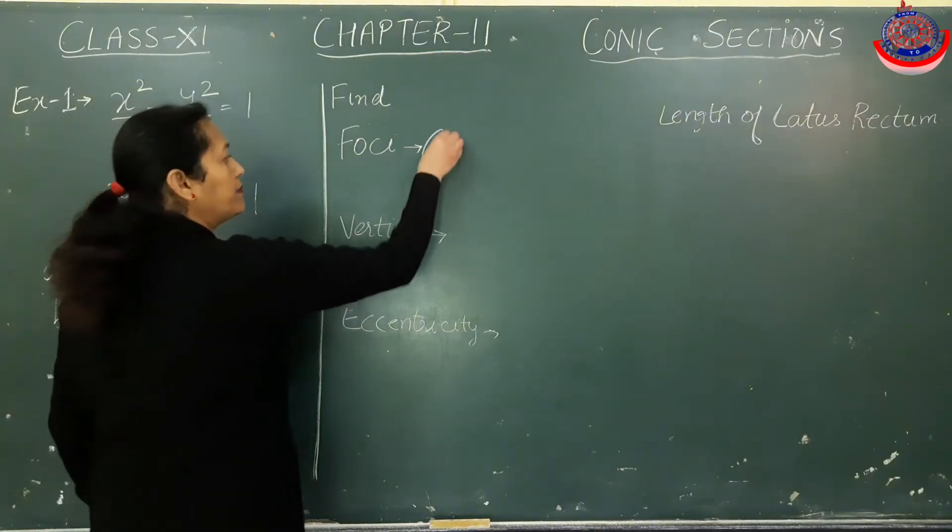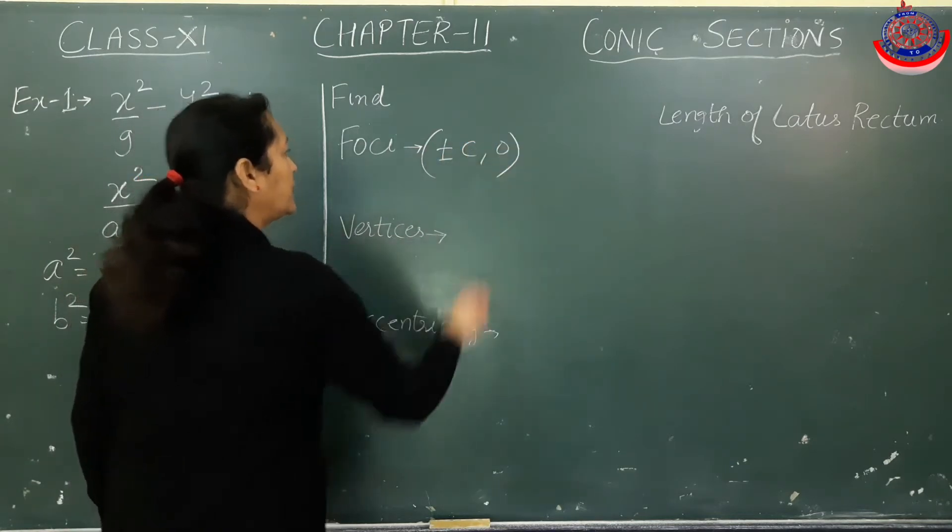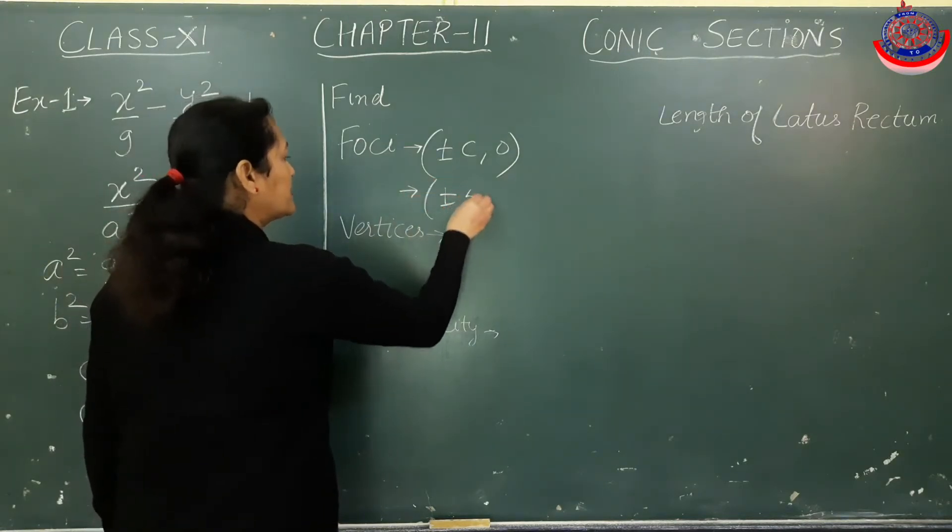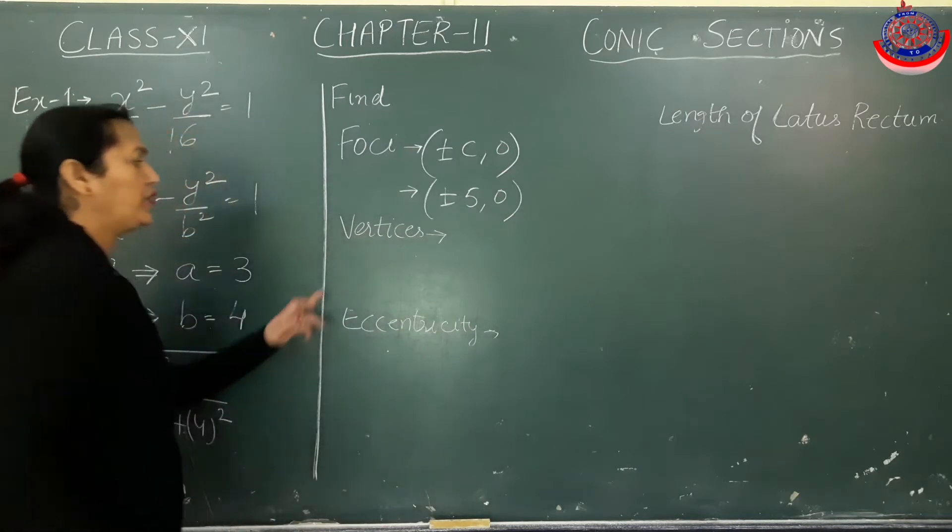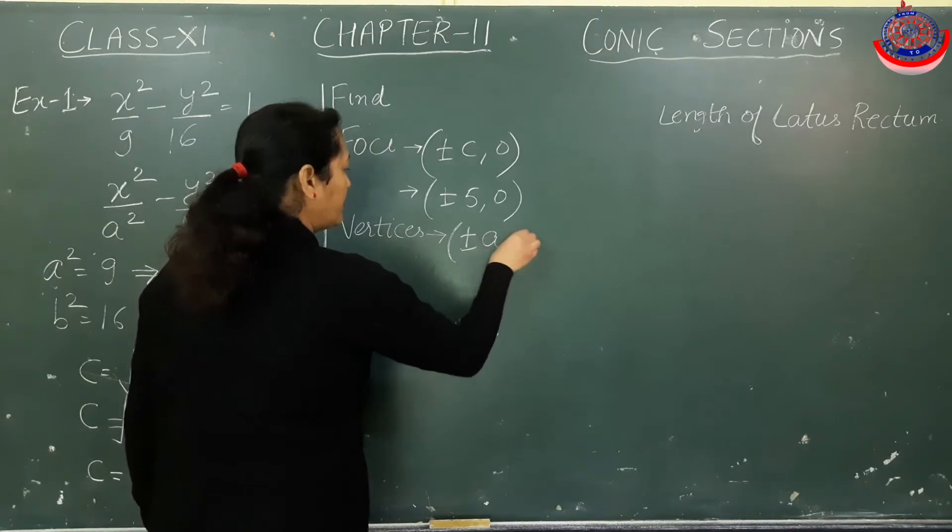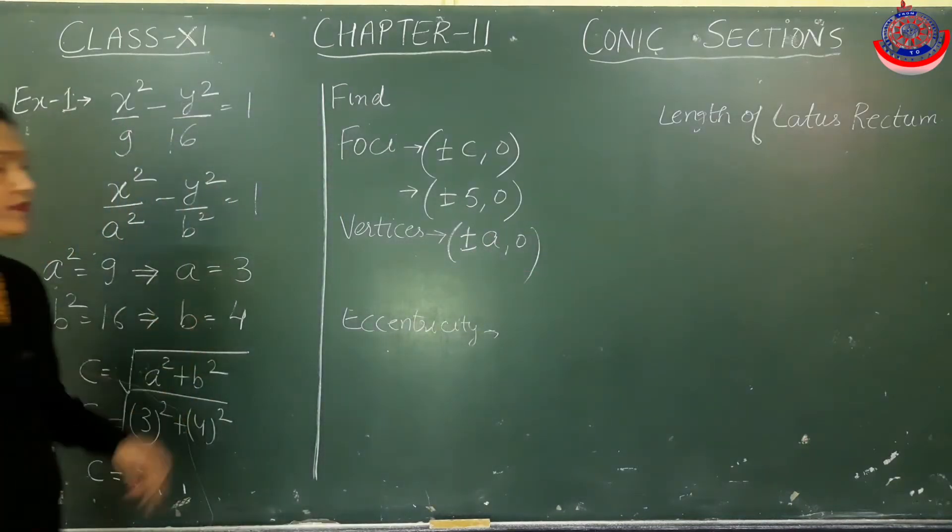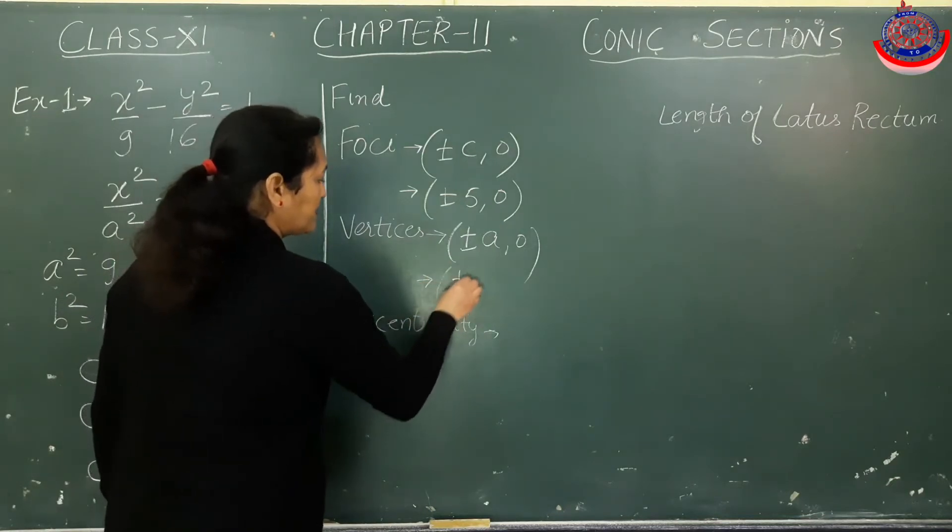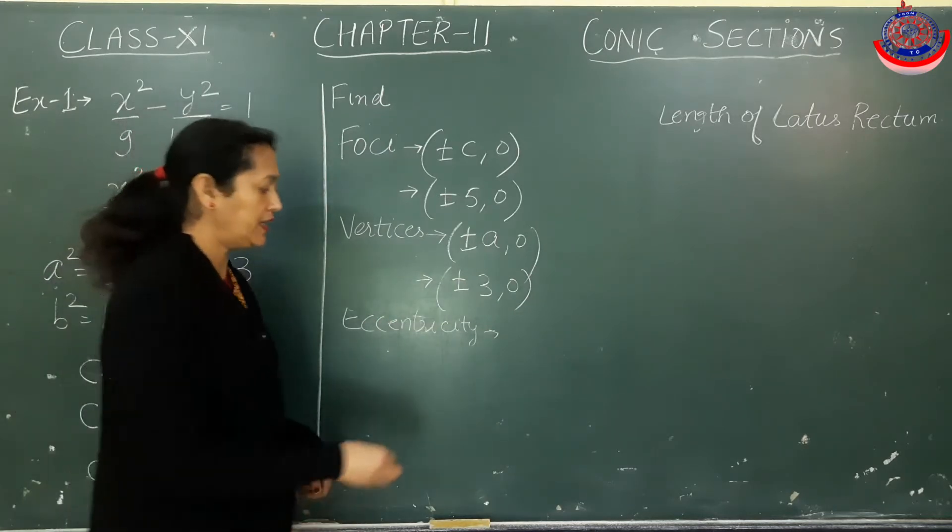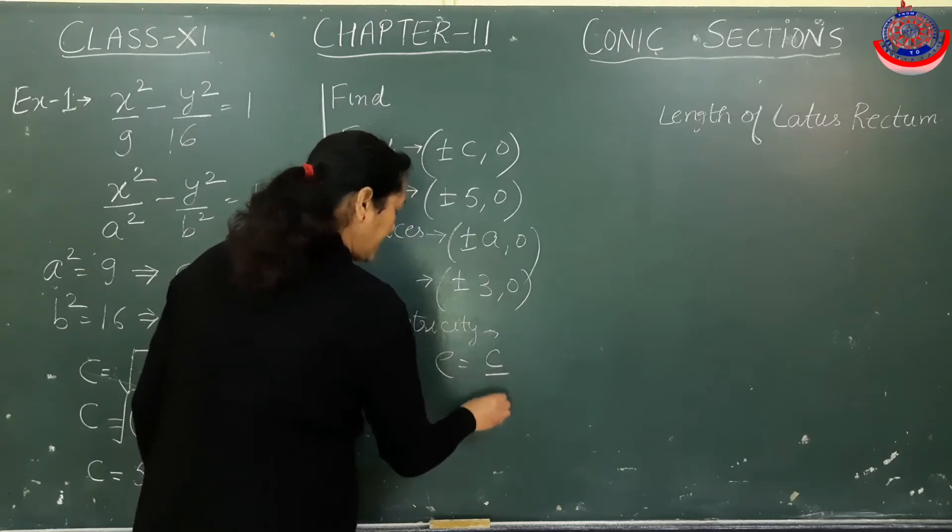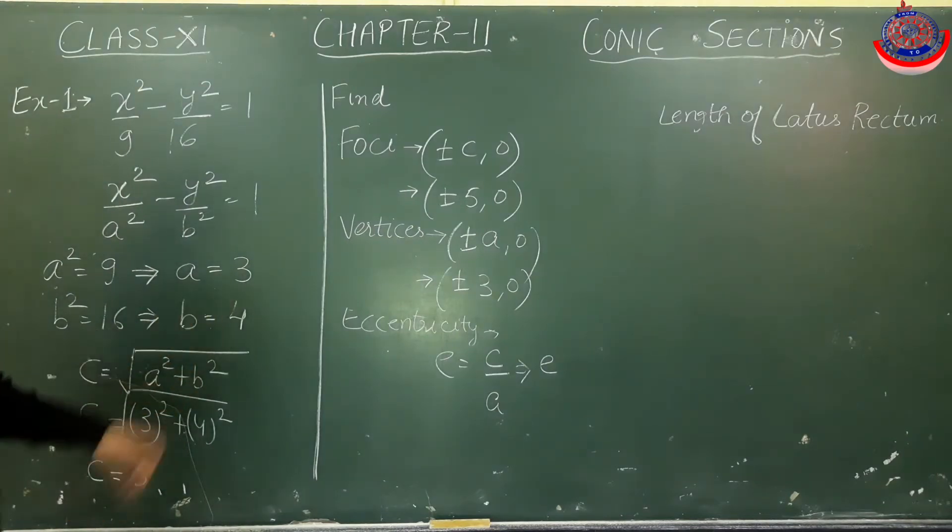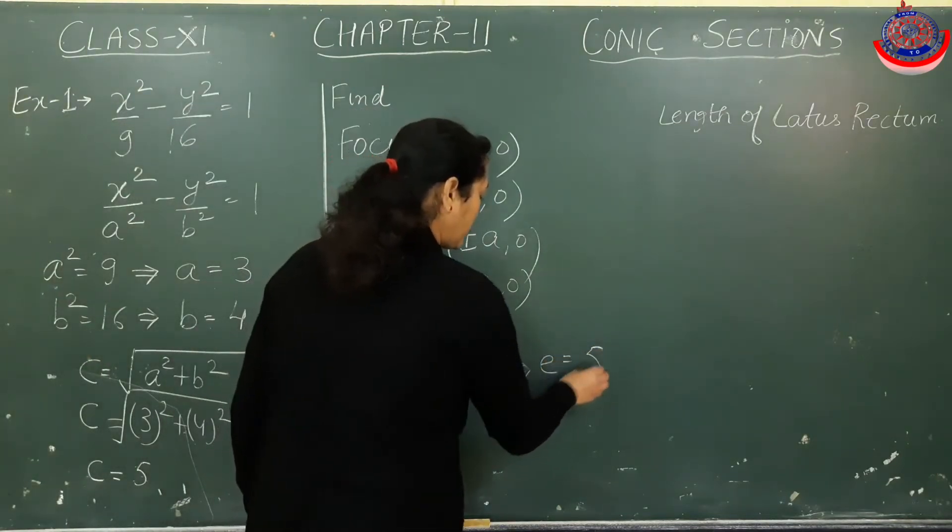Now, in this equation, focus is (±c, 0). We have c = 5, so focus points will be (±5, 0). Vertices in this equation are (±a, 0), and a = 3, so vertices will be (±3, 0). Eccentricity e = c/a, so e = 5/3.